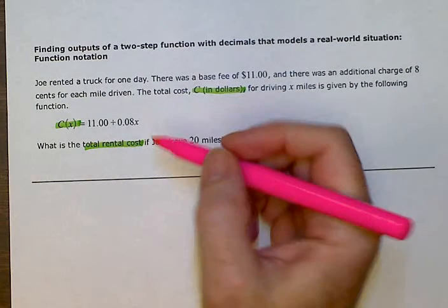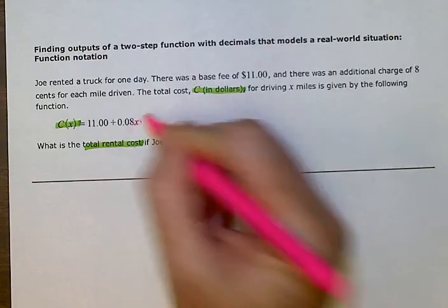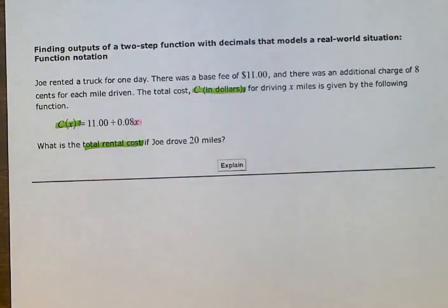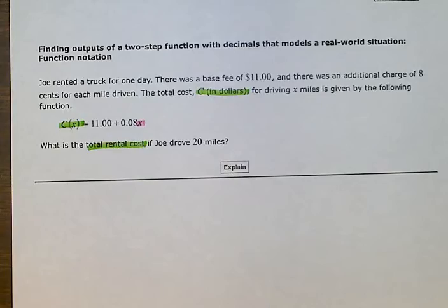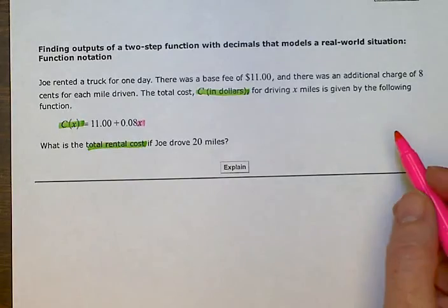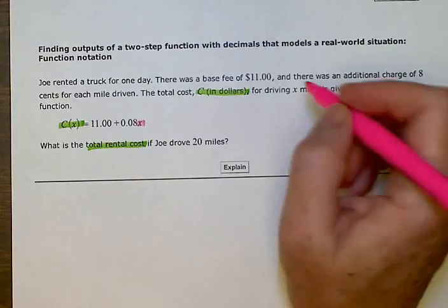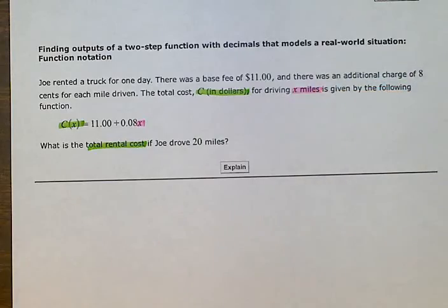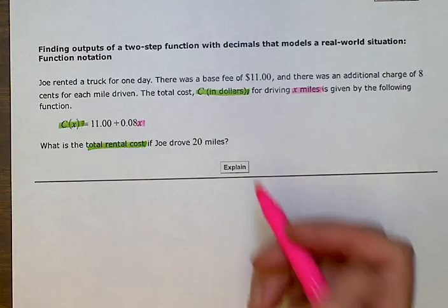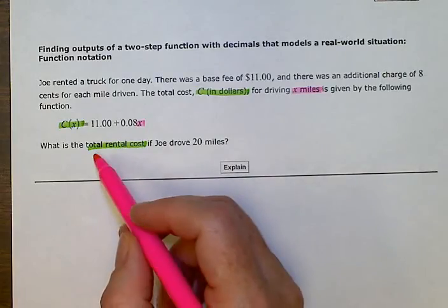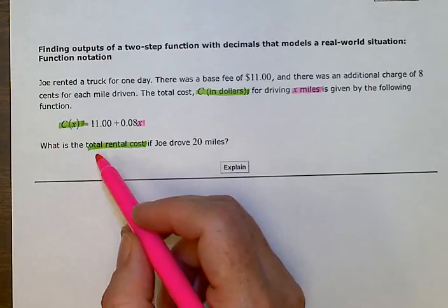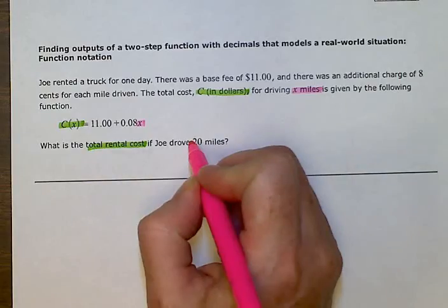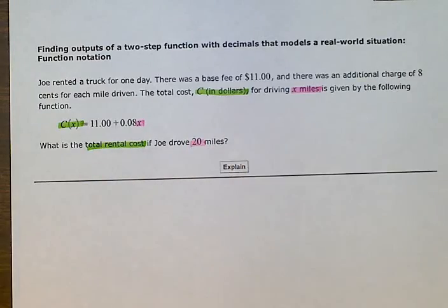Now this x is what we need to know. What are we going to put in for x to come up with that total rental cost? So, x is in miles. We're driving x miles. And so then in this question at the bottom, what is the total rental cost if Joe drove 20 miles? That is the x number we're going to put in there.